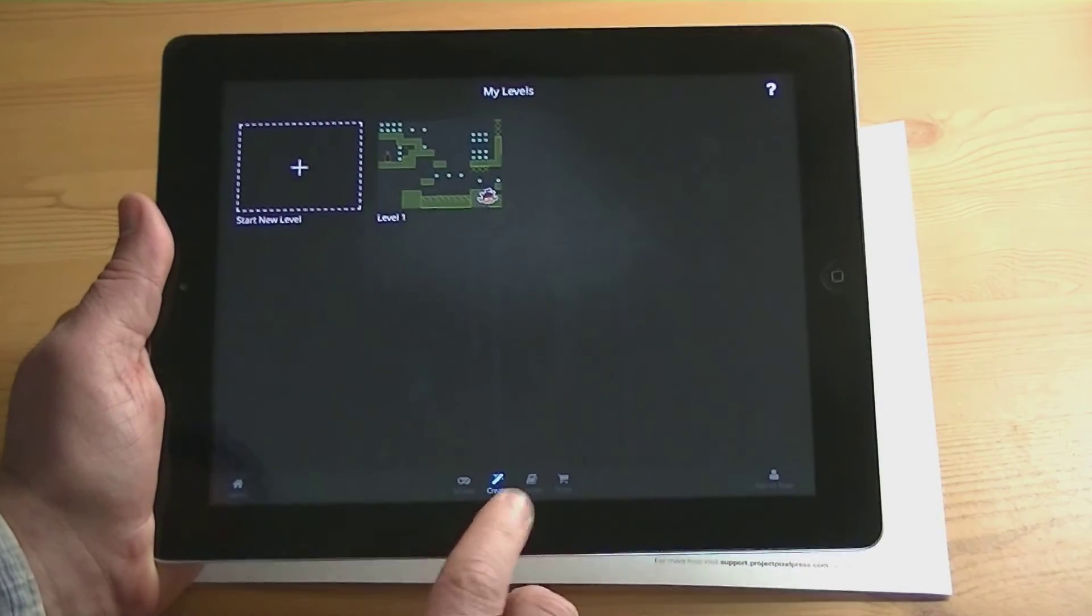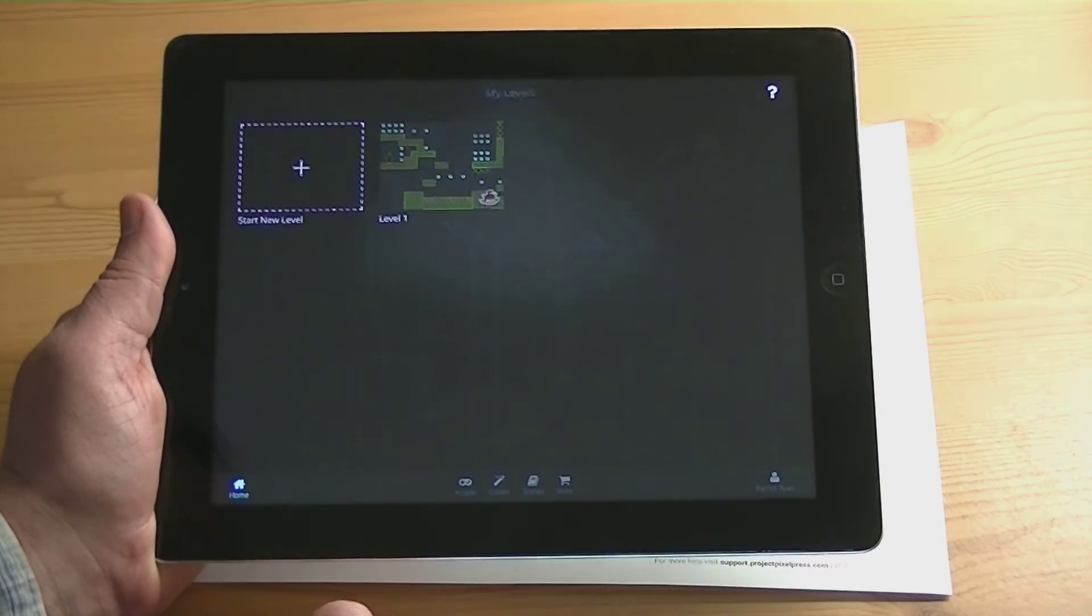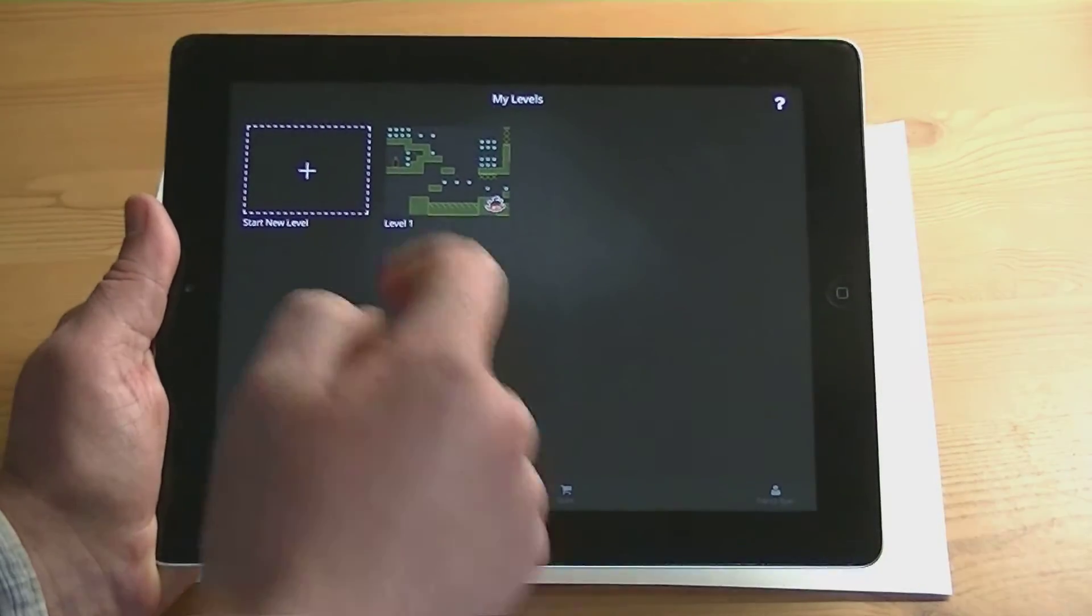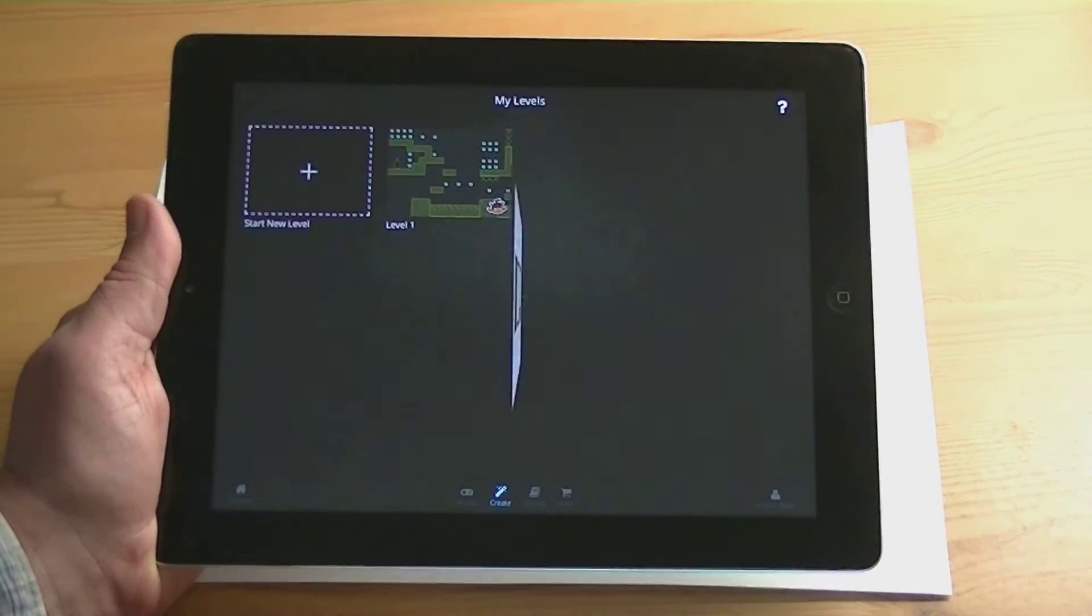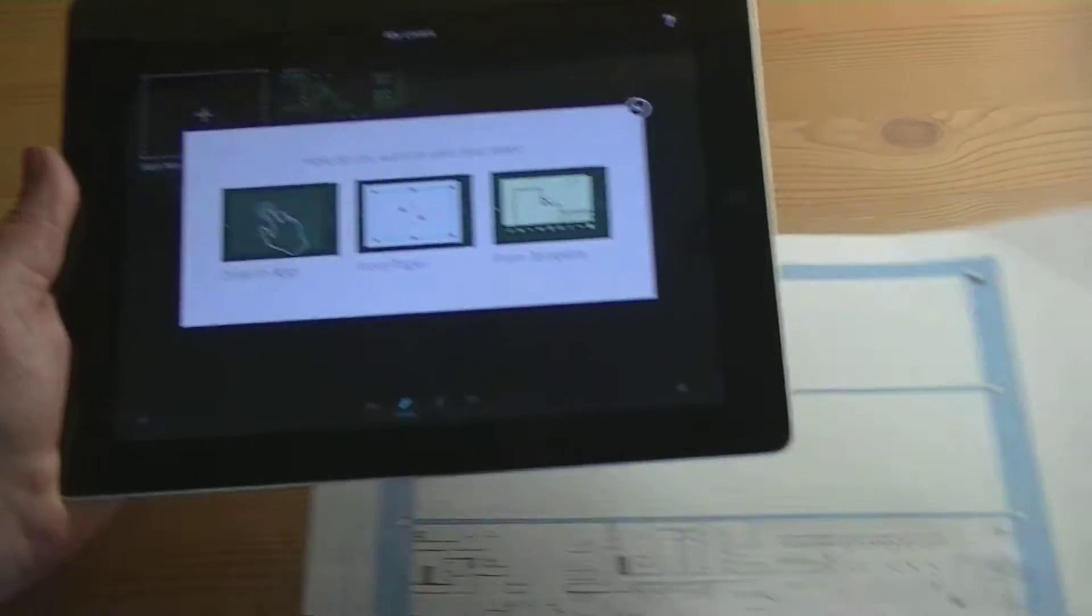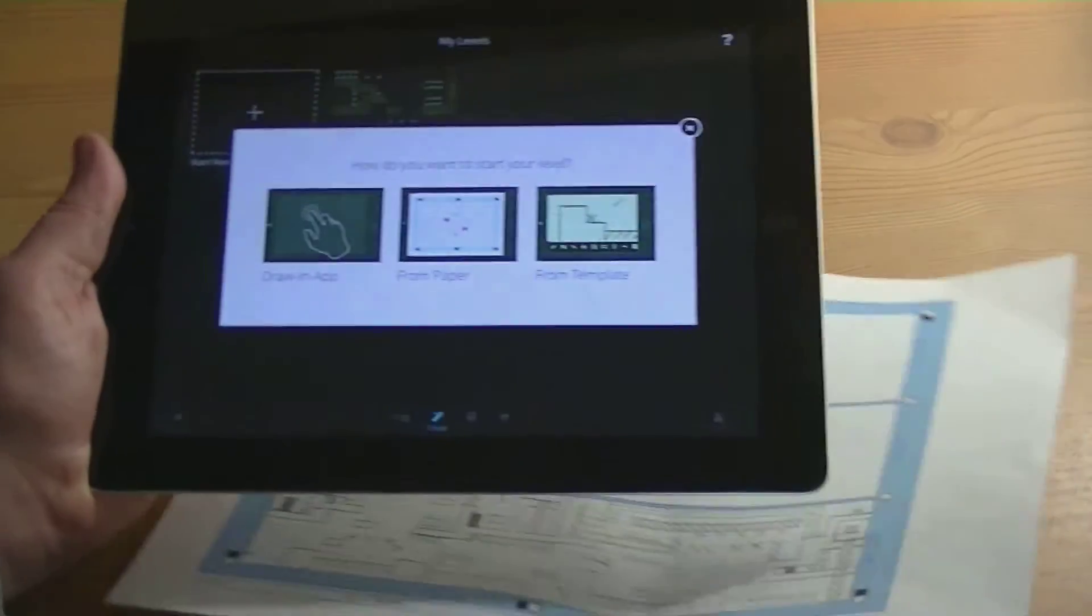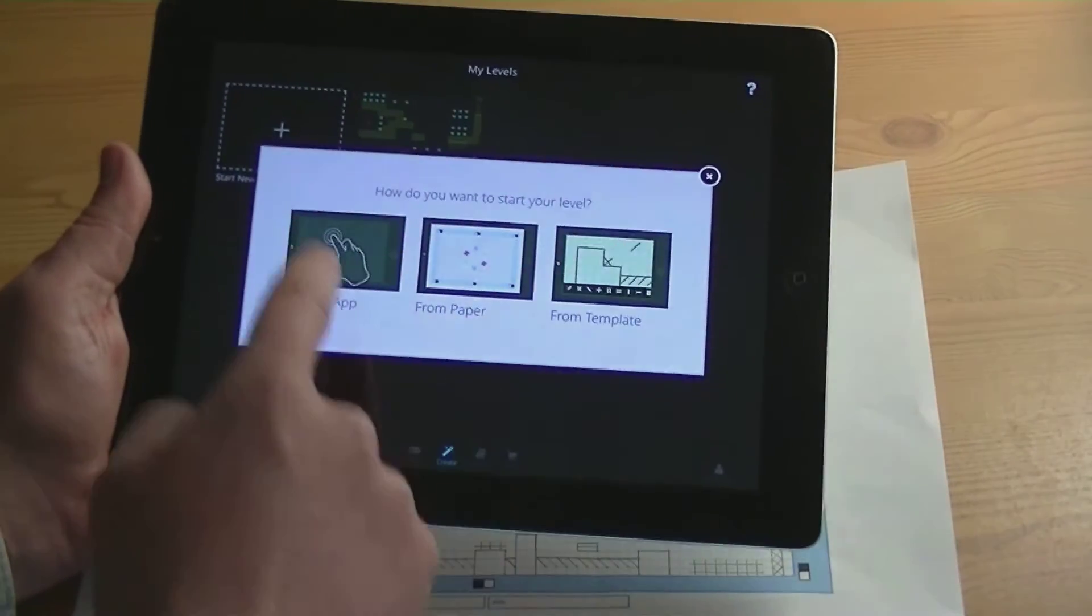But the true genius of this is the create side. So you start a new level and it gives you multiple ways of doing it. If you don't want to print out the paper and draw all that out, you just want to start doing it, you can draw in-app.